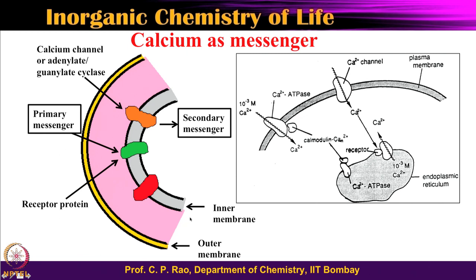When you have an interaction at the outer membrane and the signal comes from the inner membrane, that is the secondary messenger role of calcium. Calcium can give a direct response as a primary messenger, or it can give a response through cycles — acting as a secondary messenger. Calcium can activate calmodulin and carry out large numbers of phosphorylation and dephosphorylation events, and can give both primary and secondary messenger outputs.